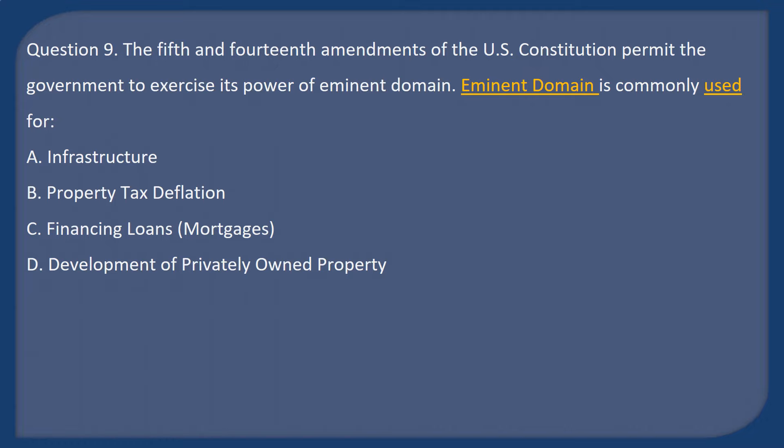Question 9: The 5th and 14th Amendments of the U.S. Constitution permit the government to exercise its power of eminent domain. Eminent domain is commonly used for: A. Infrastructure. B. Property tax deflation. C. Financing loans or mortgage. D. Development of privately owned property.